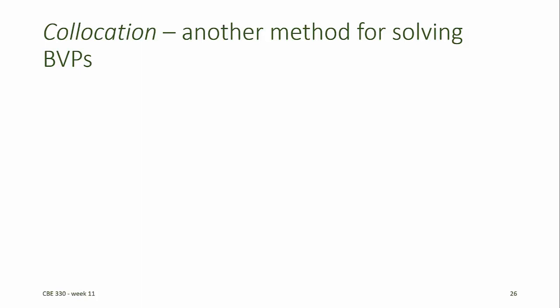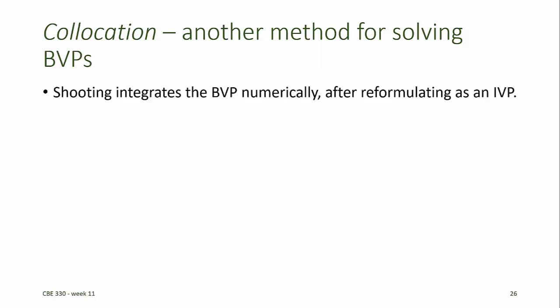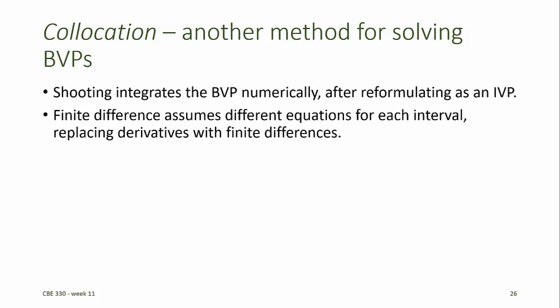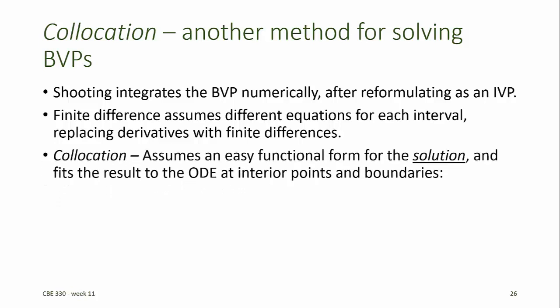The next method for finding solutions to boundary value problems is called collocation. This method is not covered in the methods textbook. Where the shooting method integrates the boundary value problem numerically after reformulating it as an initial value problem, and the finite difference method assumes difference equations for each interval replacing derivatives with finite differences, the collocation method assumes some easy functional form for the solution and then fits the result to the ODE at the interior points and the boundaries.